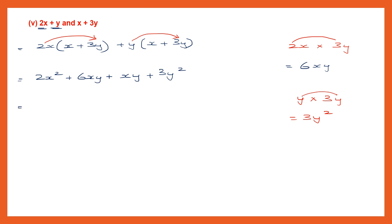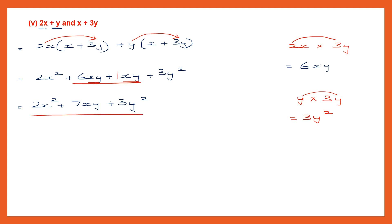So here we have 2x square. Now look at 6xy and xy — they're like terms. It's understood the coefficient is 1, so 6 plus 1 is 7, giving 7xy. Then we have 3y square by itself — you can't add it to anything else. So 3y square. Our final answer is 2x square plus 7xy plus 3y square.